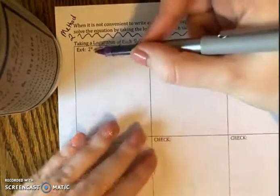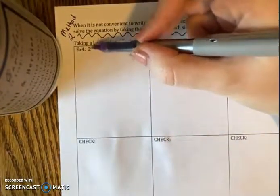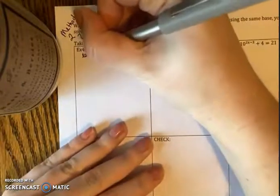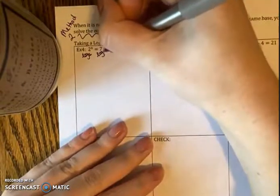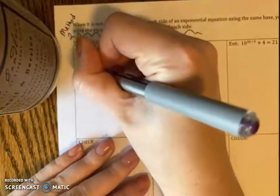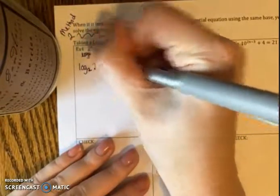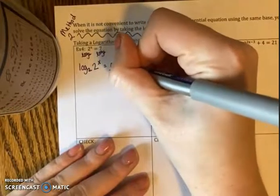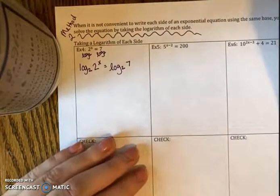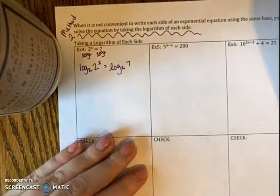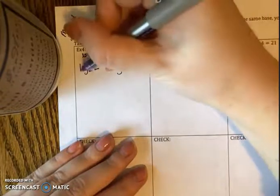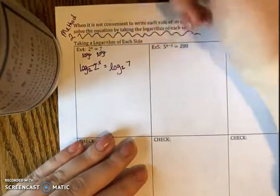So for Example 4, I see that the base of my exponent is two. So what I'd have to do is take log base 2 of each side. I now have log base 2 of 2^x equals log base 2 of 7. Remember the inverse property: if the log base is the same as the base of the exponent, they cancel each other out, so I'm just left with x.